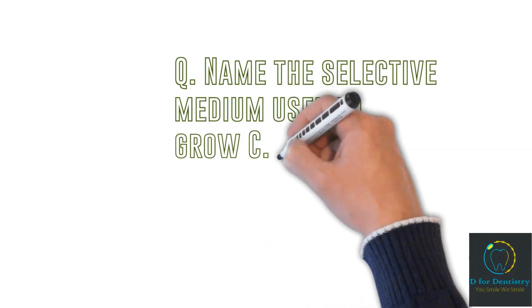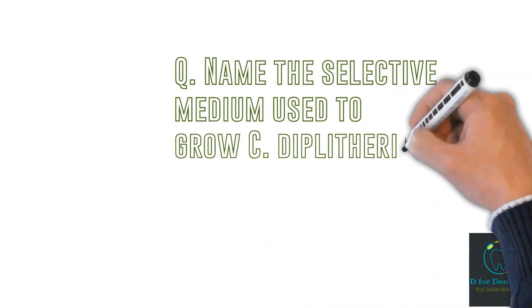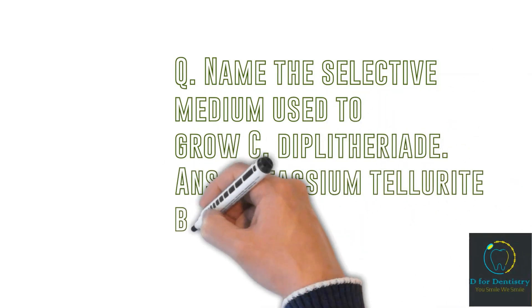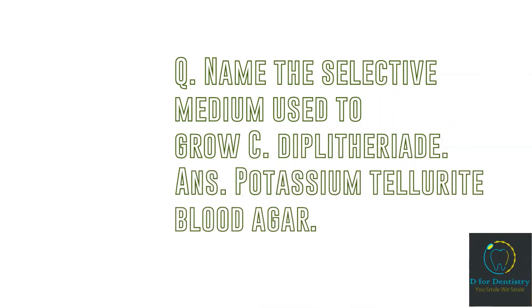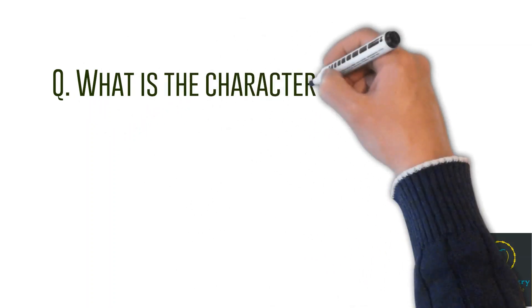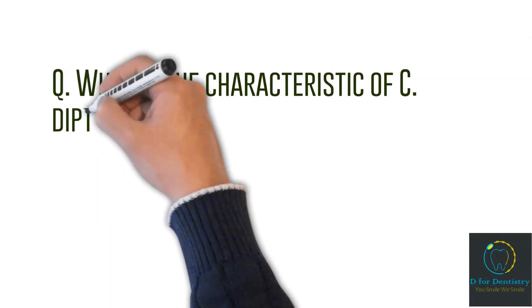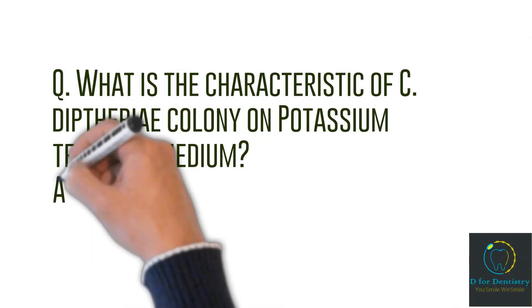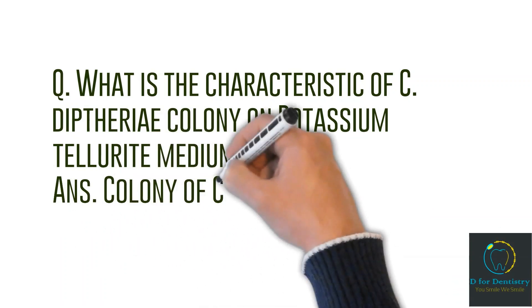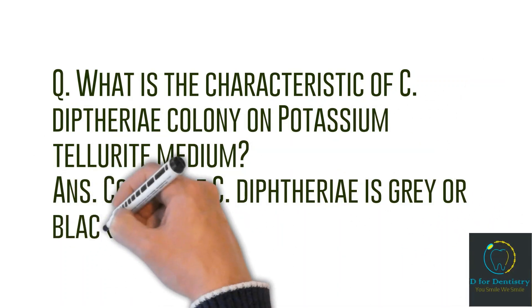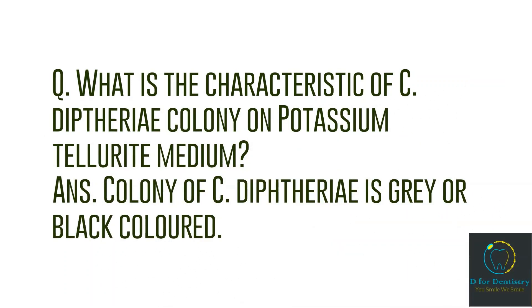Question: Name the selective medium used to grow C. diphtheriae. Answer: Potassium tellurite blood agar. Question: What is the characteristic of C. diphtheriae colony on potassium tellurite medium? Answer: The colony of C. diphtheriae is gray or black colored.